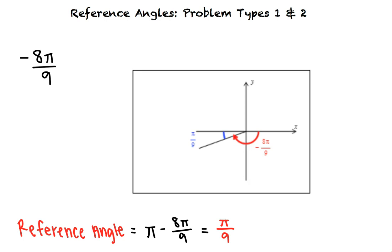Okay, I think I'm starting to understand this topic, but what if we're given an angle theta that's greater than 2π? Great question.